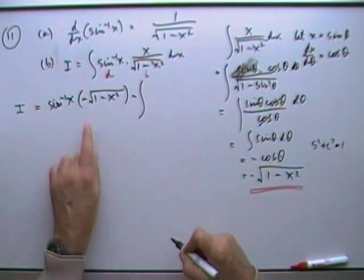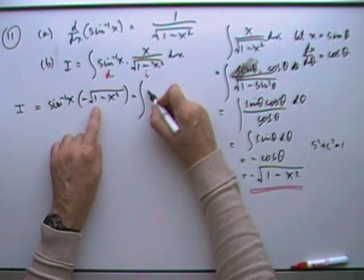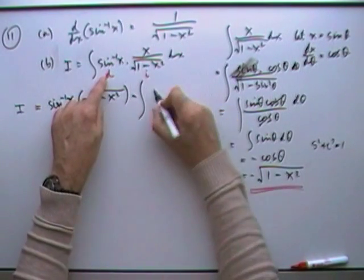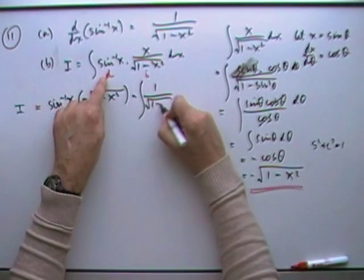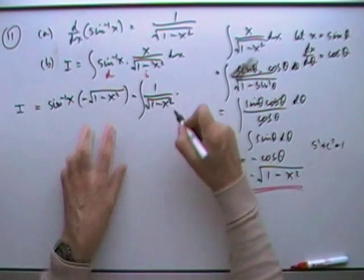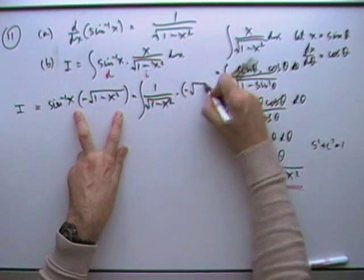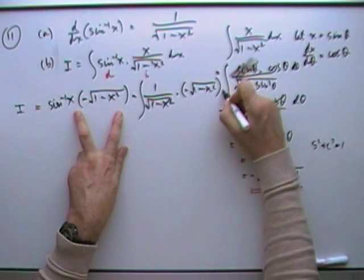Minus the integral of, now that I've done that, I'm going to leave that one alone. But integrate this one. I'm sorry, differentiate this one now. So that's going to be 1 over the square root of 1 minus x squared times the one I had already integrated. That gets left alone. Times negative square root of 1 minus x squared dx.